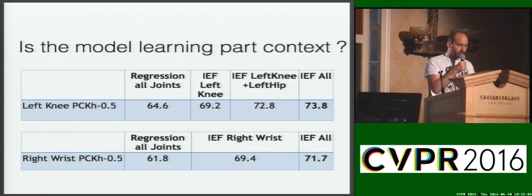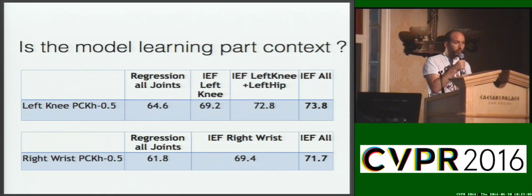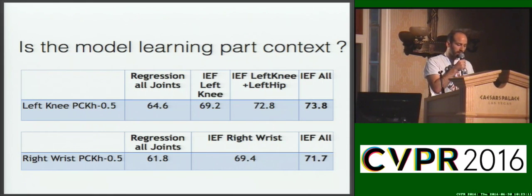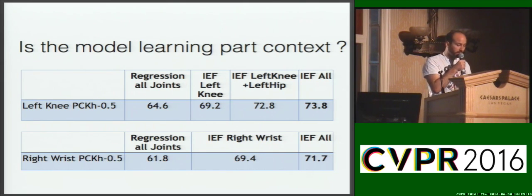In the learning part context, we train several models on the MPII, where higher is better. For example, in the case of... ...all the joints get 64.6 PCKH.